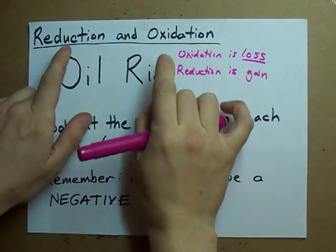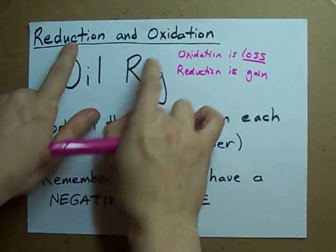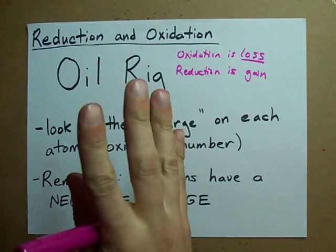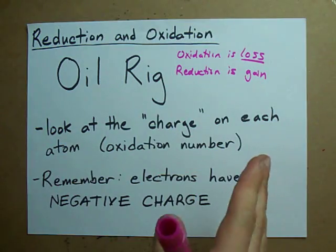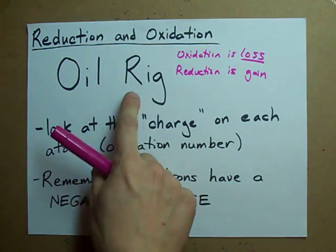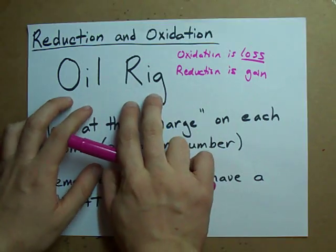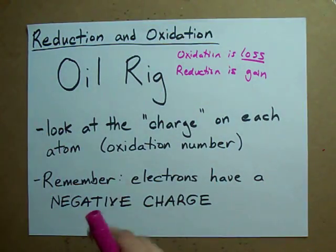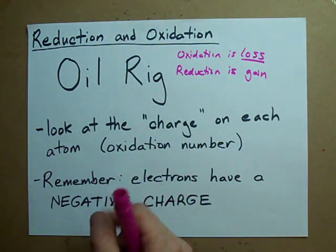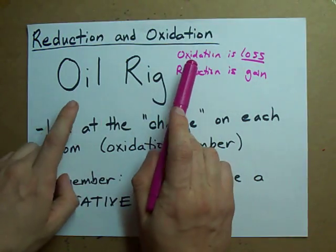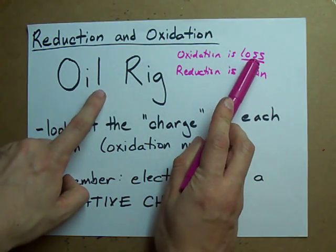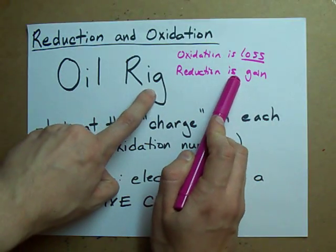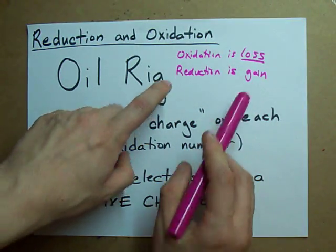Today I want to talk about reduction and oxidation of atoms in compounds during chemical reactions. What I need you to remember for this entire video is OIL RIG. This is a little acronym that's going to help you remember the difference between reduction and oxidation. I use this one because it clearly tells me that oxidation is a loss of electrons and reduction is a gain of electrons.